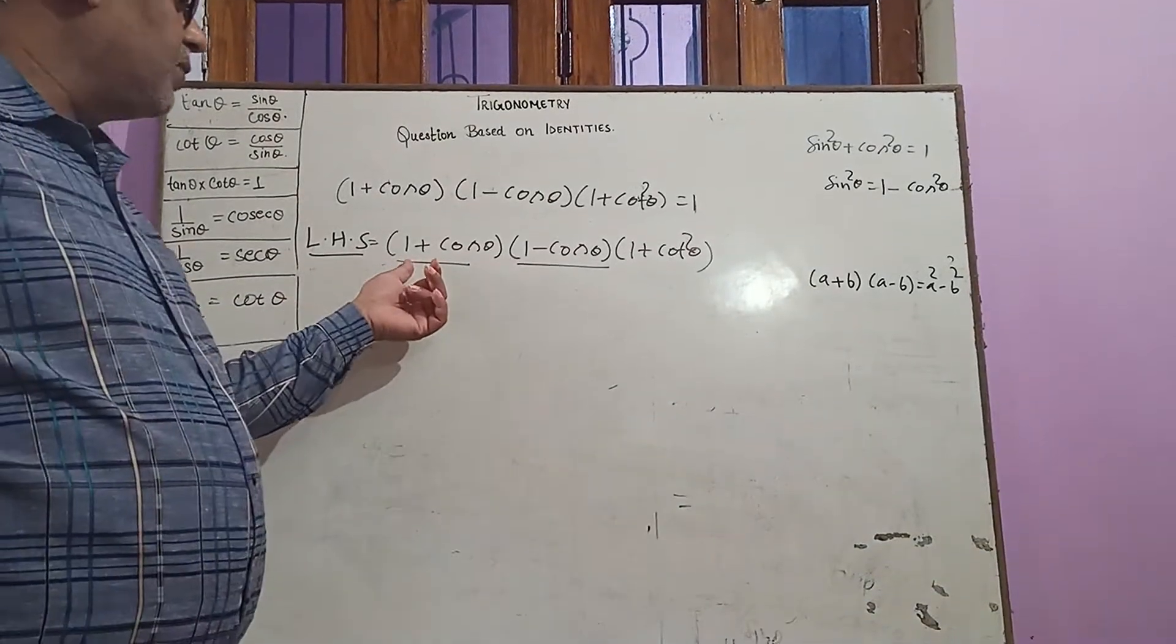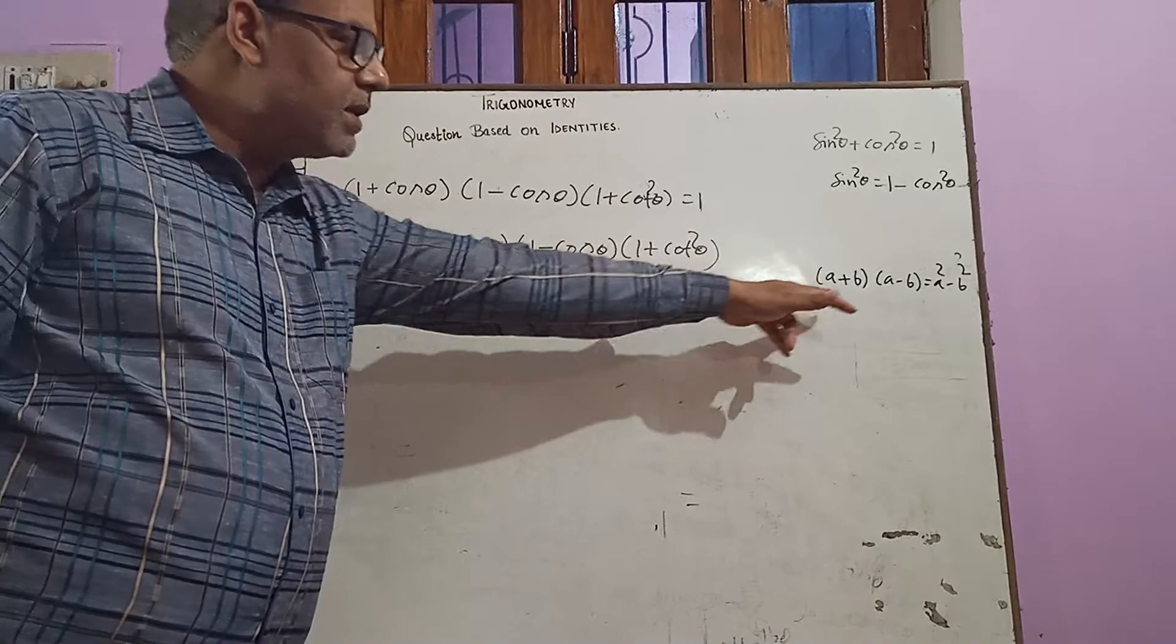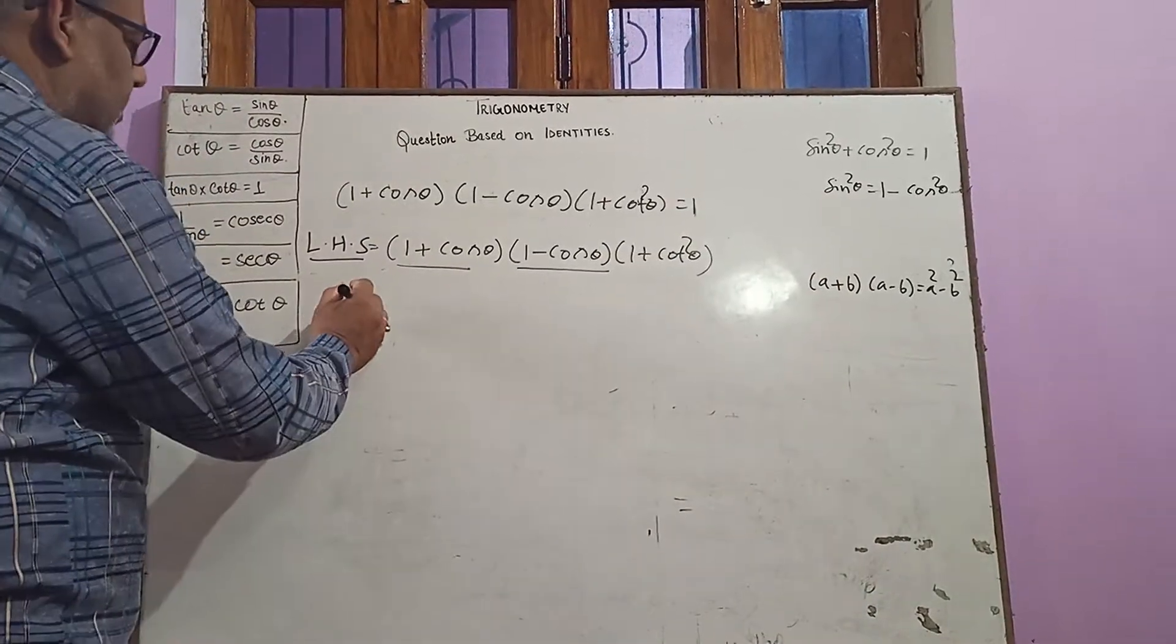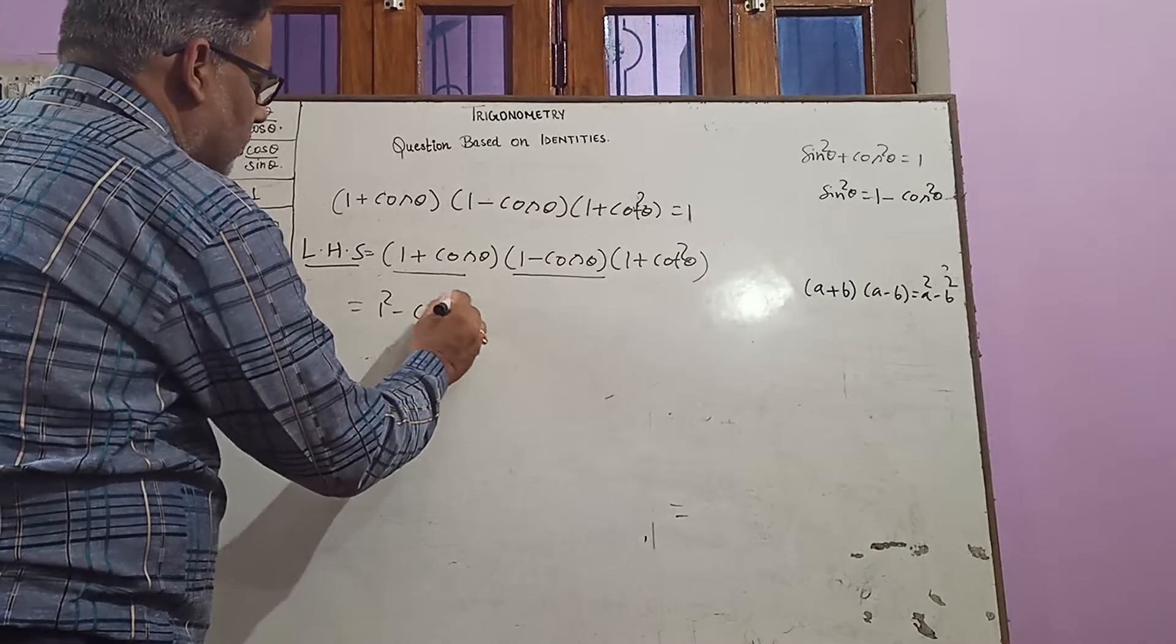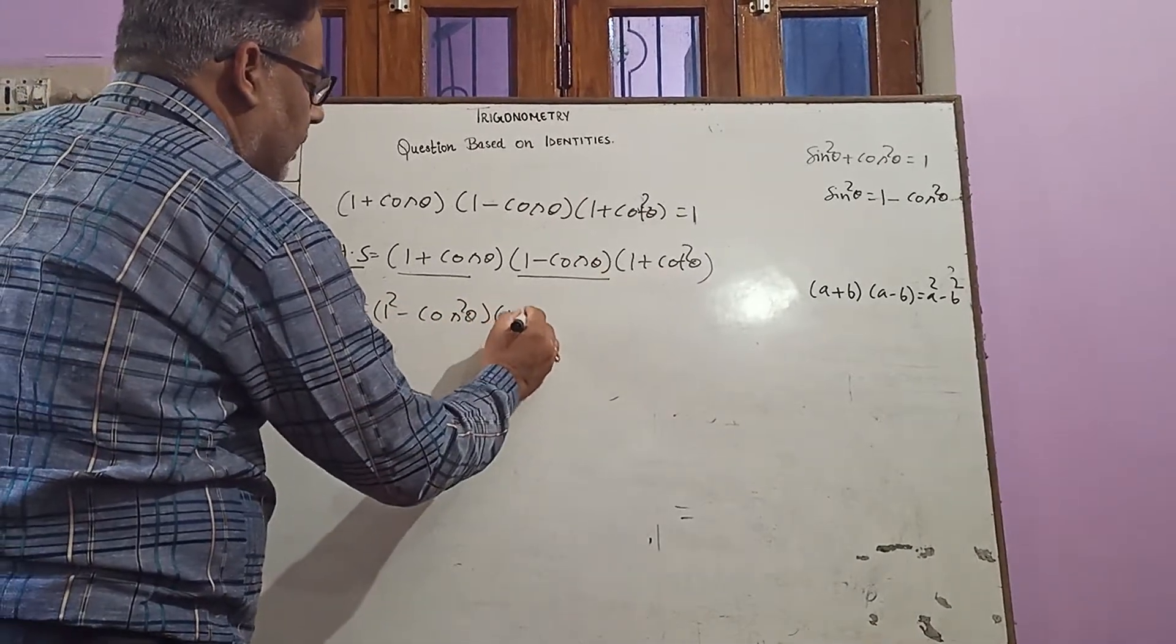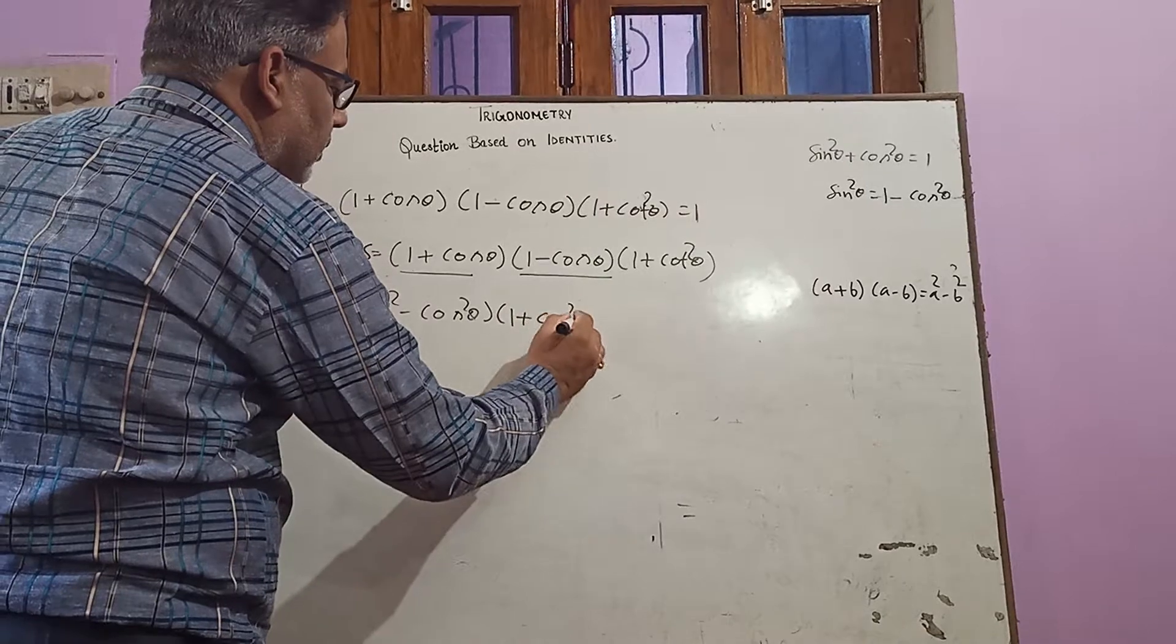We see it here it is in the form of (a + b) and (a - b). So using this identity in the next step we will get here 1² - cos²θ and in another factor it is 1 + cot²θ.